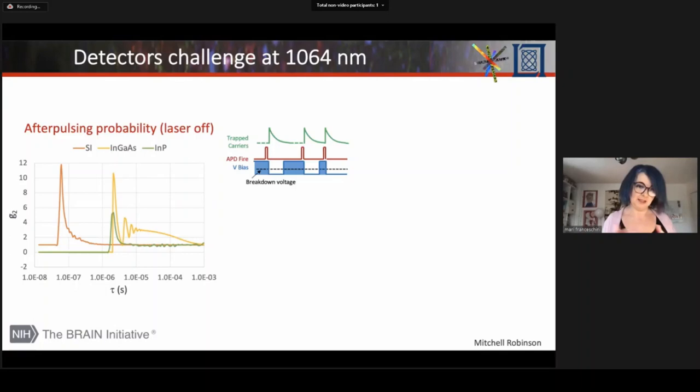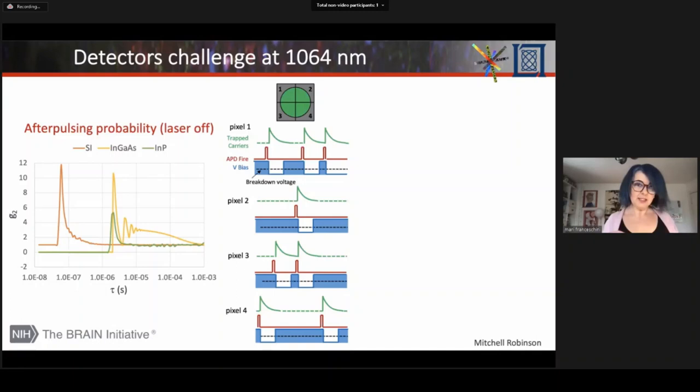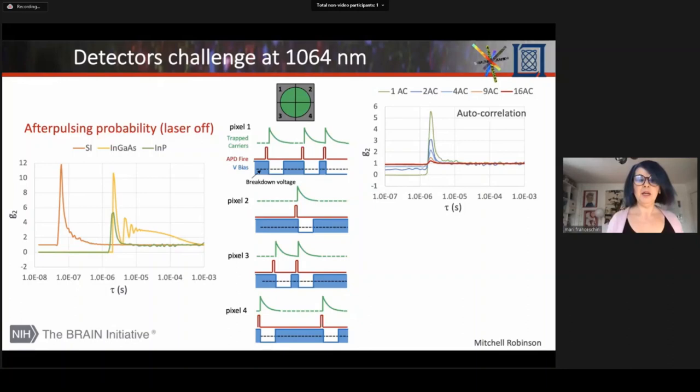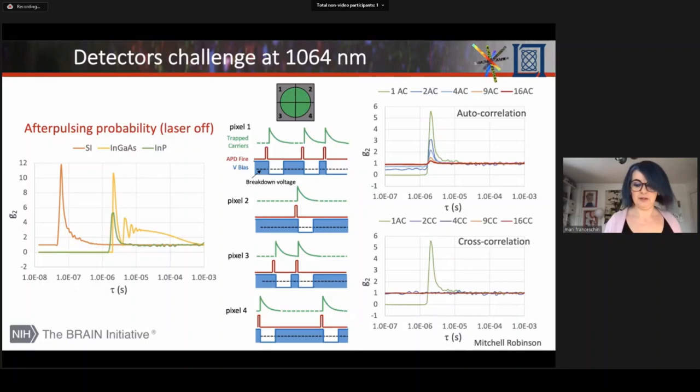Lincoln Lab uses indium phosphide technology that has a smaller afterpulsing and less tail. But still, there is something there. So our strategy is to create a macro pixel that uses a number of detectors. And when one of them is off, the others continue to detect. So if I calculate the autocorrelation function of two or more detectors, I can reduce this afterpulsing probability. And even better, if I do a cross correlation, I can decrease this afterpulsing effect just using two detectors.